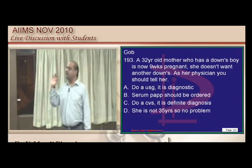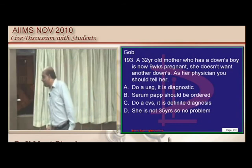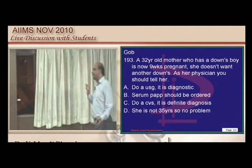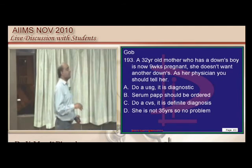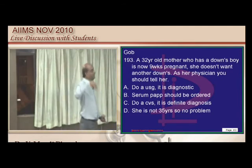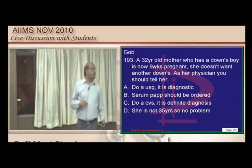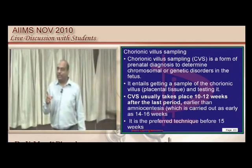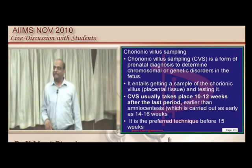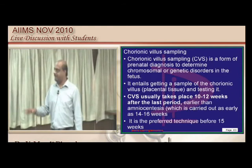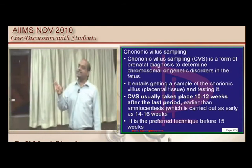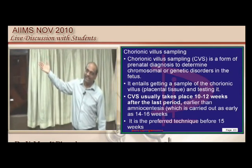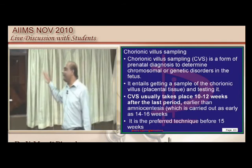Down syndrome screening at 9 weeks: chorionic villus sampling cannot be done because it is performed at 10–12 weeks; amniocentesis also cannot be done as it is performed later. Serum PAPP-A can be sent for early serum analysis, which makes it the answer at 9 weeks.